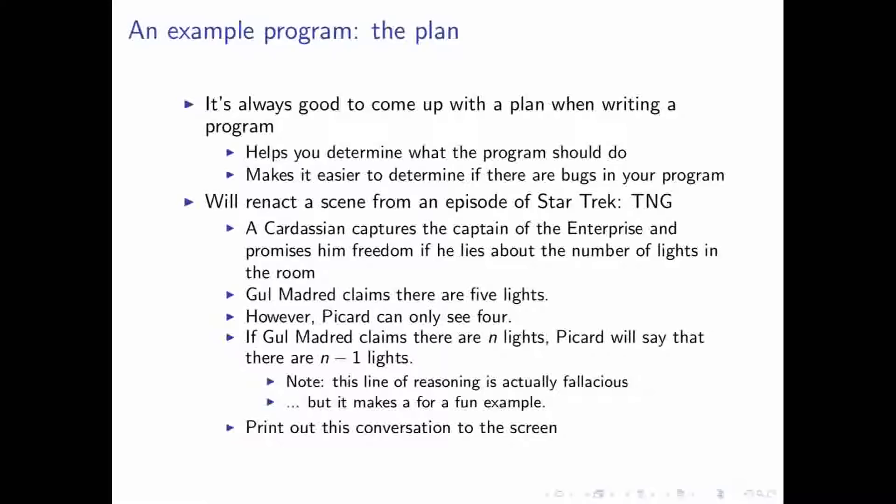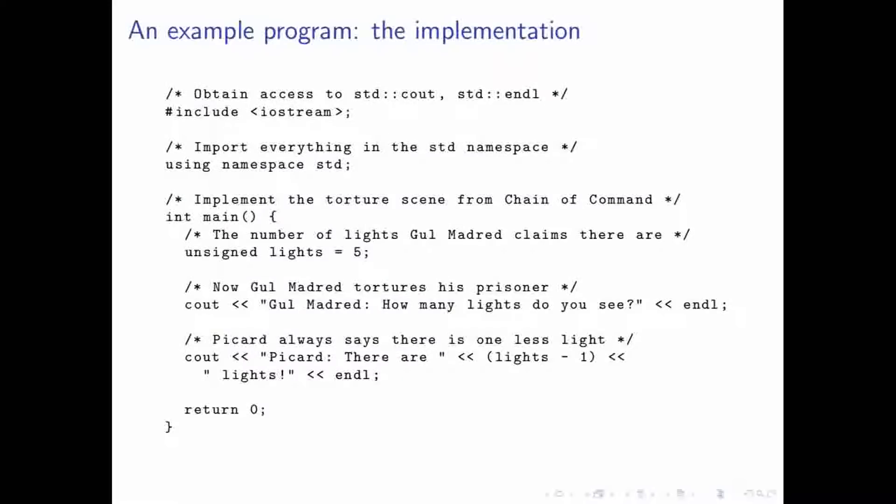So, first of all, we have some boilerplate code here. Just everything from here to here allows us to get what we need to print out to the screen. We'll probably discuss this more in later episodes, so that you have more of an idea of what's going on. But for now, just take it on faith that this allows us to print to the screen. And then we have the real meat of our program, which is this main function.